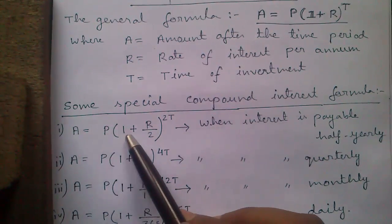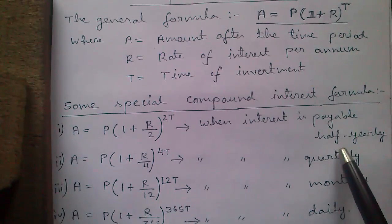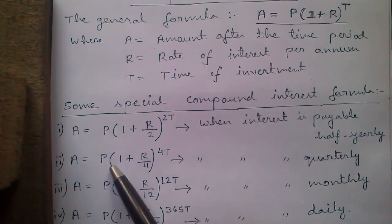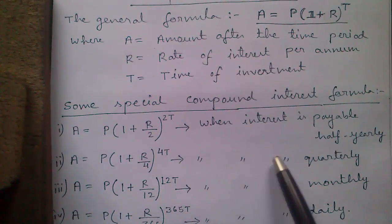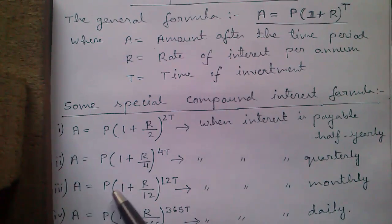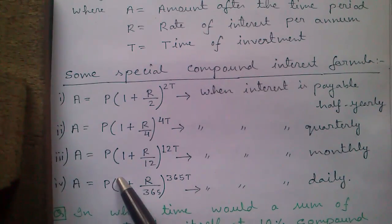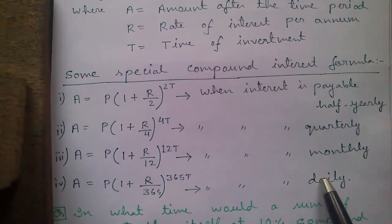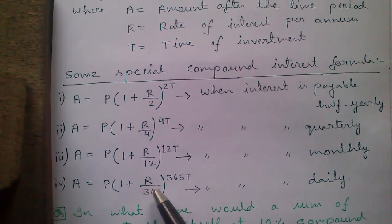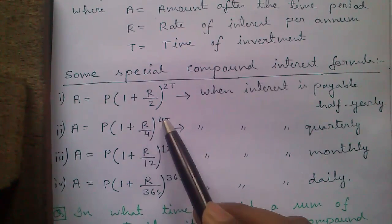A = P × (1 + R/2)^(2T) when the interest is calculated half yearly. A = P × (1 + R/4)^(4T) when the interest is calculated quarterly. A = P × (1 + R/365)^(365T) when the interest is calculated daily. The number in the denominator denotes how many times per year the interest is calculated — in the quarterly case it is 4 times per year.